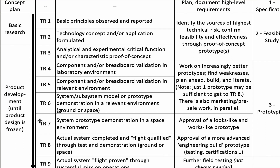Around technology readiness level 7, 8, you really need to start thinking a lot about the manufacturing process, and really make sure that the product is designed for manufacturing — it will be manufacturable at the right quality level, the right cost, and so on. It's really a must. If you're in TRL 7 or 8 and haven't thought about that, you're kind of already too late most of the time.